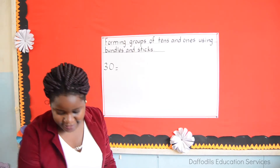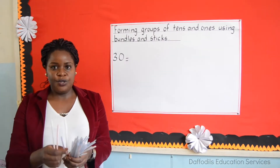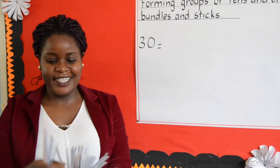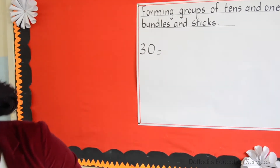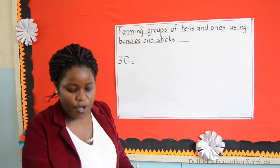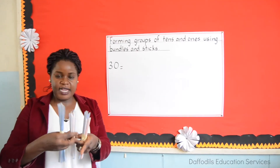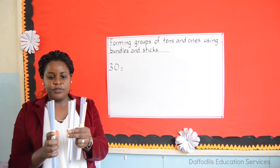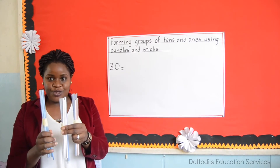Now let's put it aside. We are going to form another group of 10s: 1, 2, 3, 4, 5, 6, 7, 8, 9, 10. This is another group of 10. I've formed 3 groups of 10. This is the first 10, this is the second 10, this is the third 10. When you put them together, they make 30. So 3 tens equals 30.